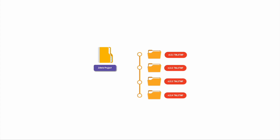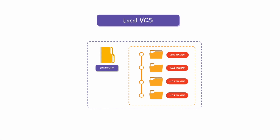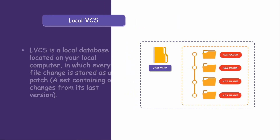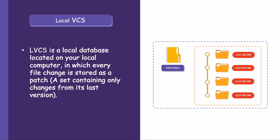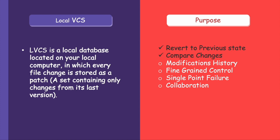To address the issue, John began regularly versioning his project on his local machine, being wise by adding timestamps to each version. A local version control system, LVCS, is a database stored on your local computer that keeps track of changes to your files by storing each change as a patch, which is a set of differences from the previous version.